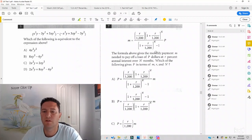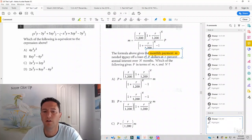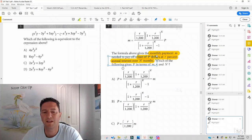the formula above gives the monthly payment M needed to pay off a loan of P dollars at R percent annual interest over N months. Which of the following gives P in terms of M, R, and N?